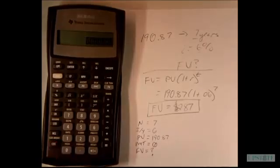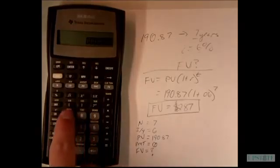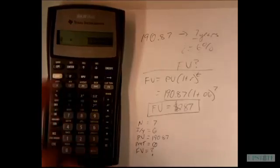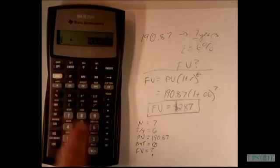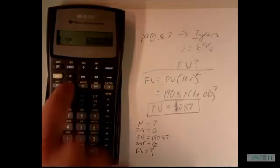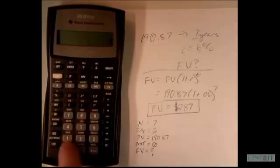So let's see if we come up with the same number. We have 7 as n, and 6 as i over y.